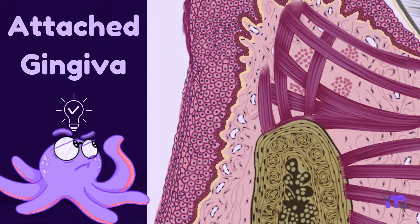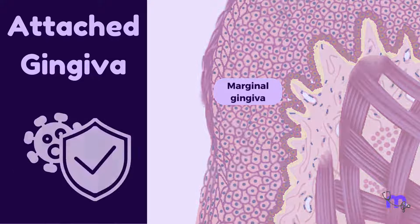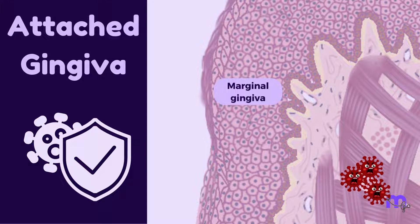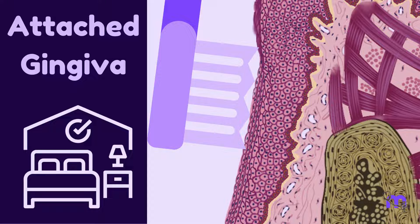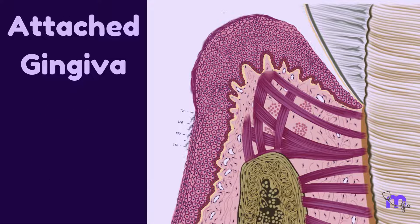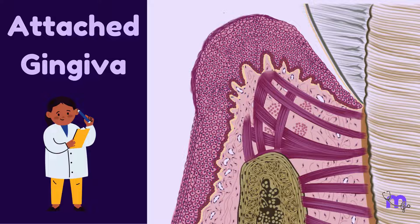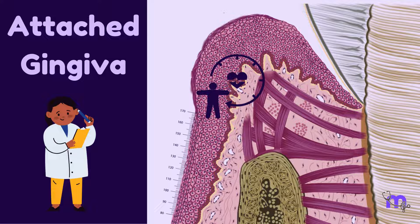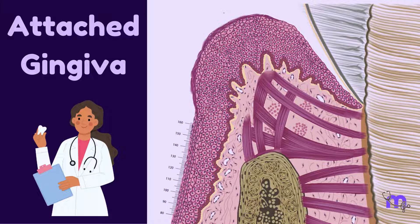The attached GENGIVA is important because it braces the marginal GENGIVA and prevents the apical spread of inflammation to the deeper periodontium. It allows for proper deflection of food and provides room for the placement of the toothbrush. It also has aesthetic value and is critical for overall GENGIVA health. For many years, it was believed that an adequate width of the attached GENGIVA is critical for the maintenance of GENGIVAL and periodontal health, and some researchers believe its width helps determine disease prognosis and treatment outcomes.